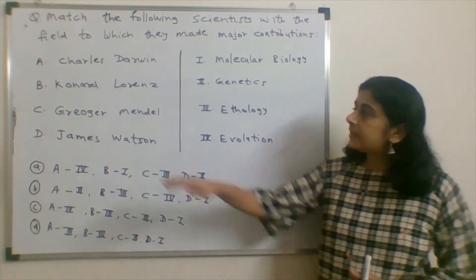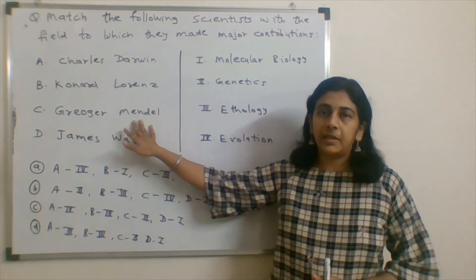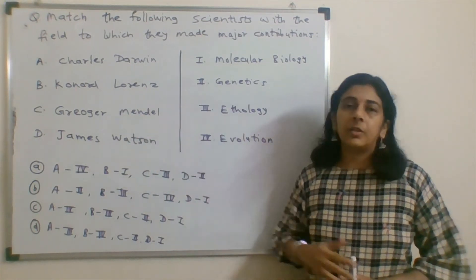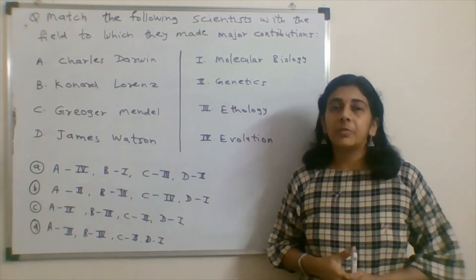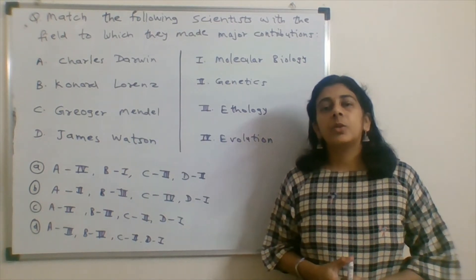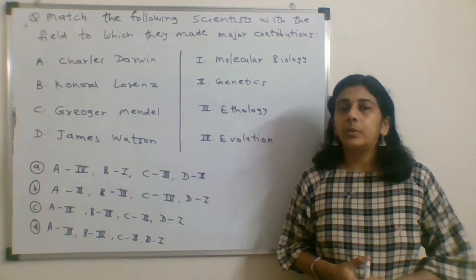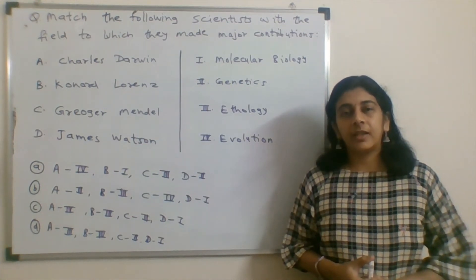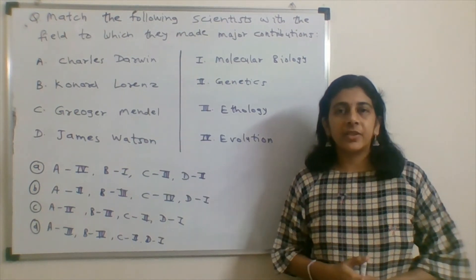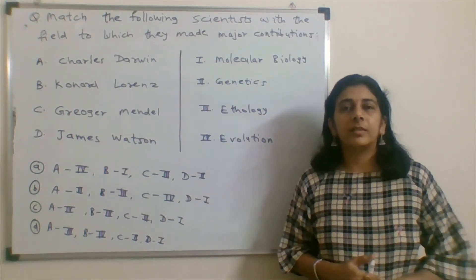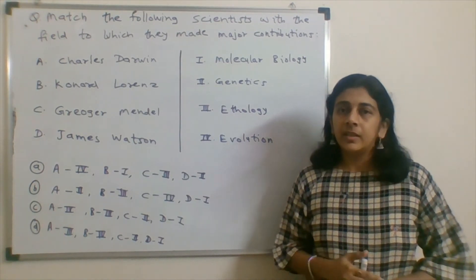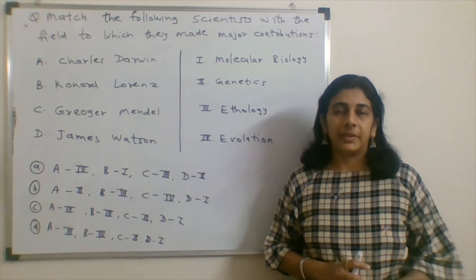The third is Gregor Mendel. Gregor Mendel's contribution is in genetics. We know that Mendel's laws are there. The inheritance pattern is described. There was a lot of research on the pea plant. The laws of inheritance were designed by Gregor Mendel.